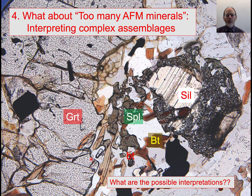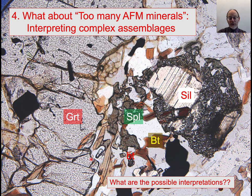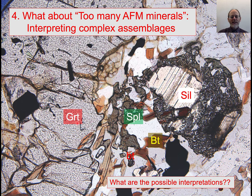Here's where I wanted to go next: what do you do if there are too many AFM minerals? How do you interpret a system like this? In the KF-MASH system with six system components, if I fix pressure and temperature, the most number of phases at equilibrium is six. We already picked three of them — quartz, water, and muscovite (or K-feldspar at high temperature) — so you should only have three AFM phases. The problem is that you find rocks where there are four: garnet, spinel, sillimanite, and biotite.